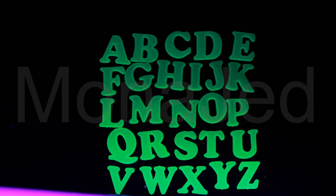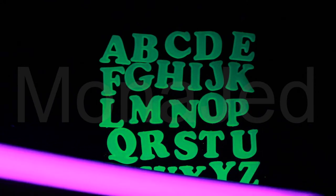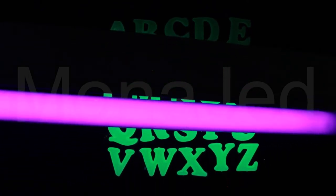Simply expose to any light source, the longer the brighter, including the sun, lamp, overhead lights, flashlights, UV lights, etc. And the glow-in-the-dark letters will provide hours of low light illumination.